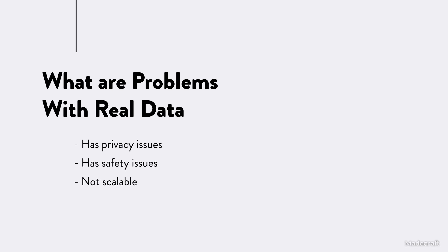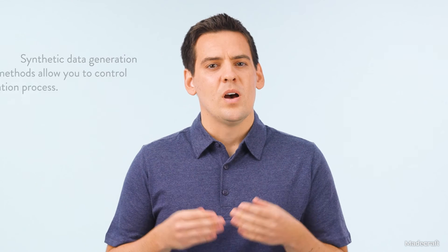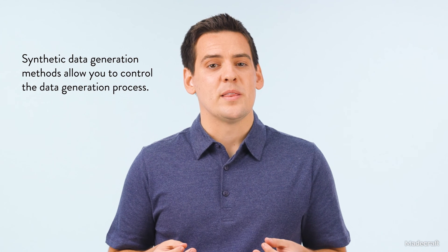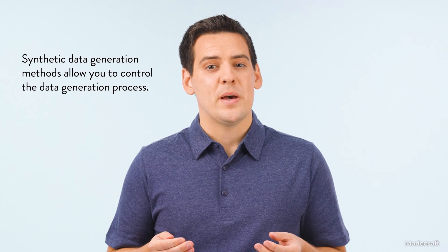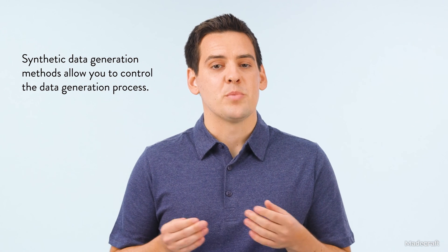One thing that initially surprised me is that sometimes manually labeling real data can be very hard, if not impossible — especially for segmentation and optical flow tasks. Finally, perhaps the biggest problem with real data is that the data you have might not be what you would ideally want. Sometimes you might not have enough real data to train your model, particularly in cases of rare events. A lot of synthetic data generation methods allow you to control every aspect of the data generation process, and it is often quicker than collecting new real data, speeding up developer velocity.